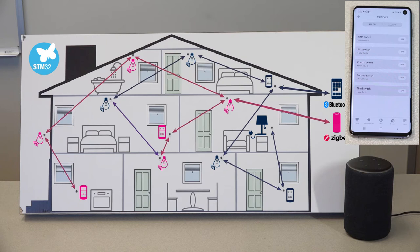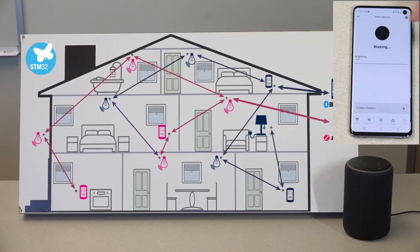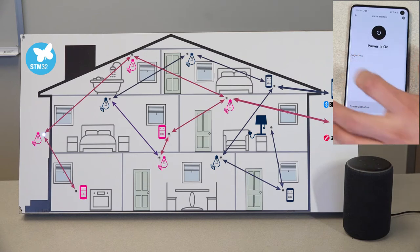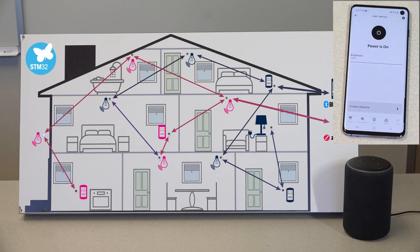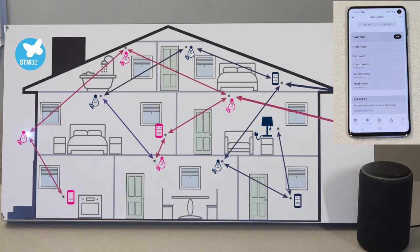The ZigBee nodes are discovered as light switches. The seamless interoperability between our STM32WB-based ZigBee nodes and a commercial hub like the Echo is possible thanks to the ZigBee radio support on both devices and, more importantly, the support of the standard ZigBee clusters related to home automation. For example, these ZigBee nodes are utilizing the on-off and level control clusters for control of the on-off state and brightness of their LED light.